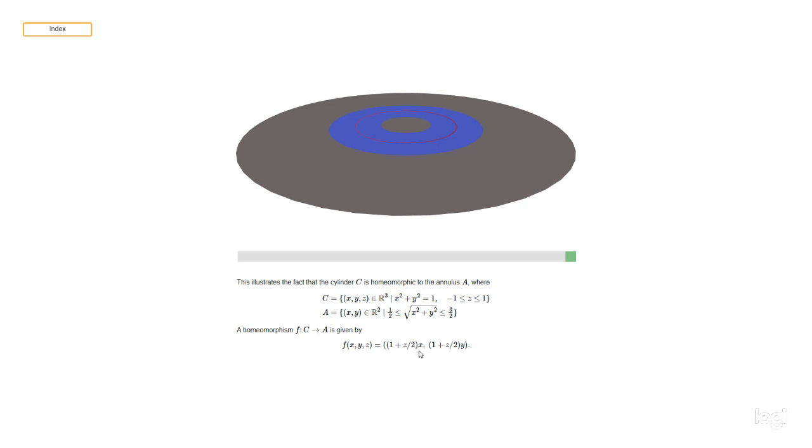I could have alternatively written this as the number (1 plus z over 2) multiplied by the vector (x, y). So the vector (x, y) is on the circle, and (1 plus z over 2), well, when z is minus one at the bottom of the cylinder, your (1 plus z over 2) is going to be equal to a half. And when z is one at the top of the cylinder, (1 plus z over 2) is equal to three halves.